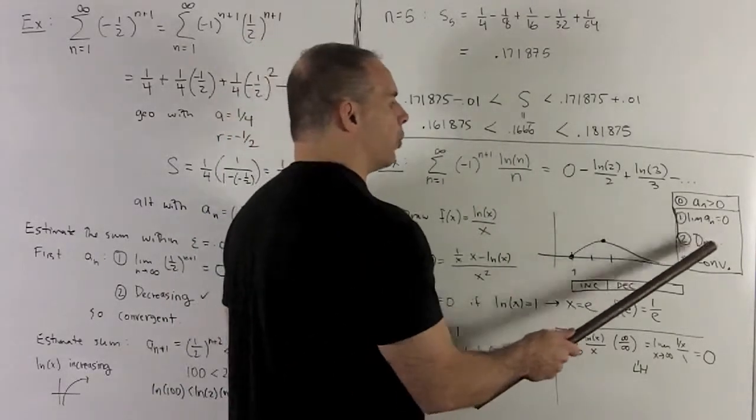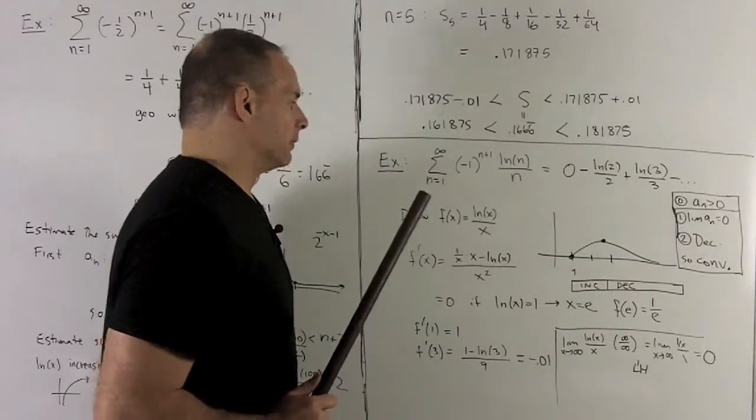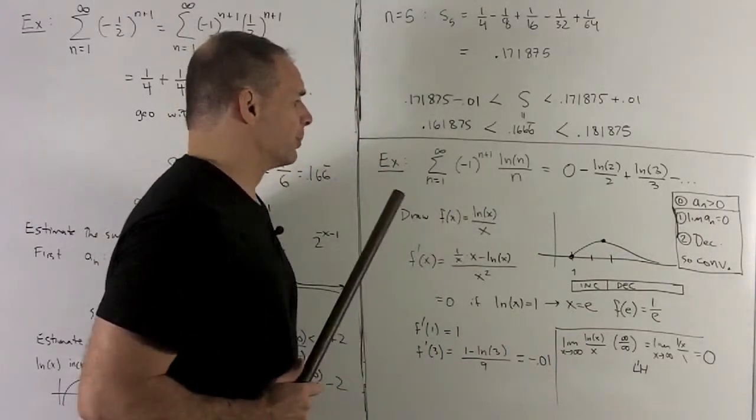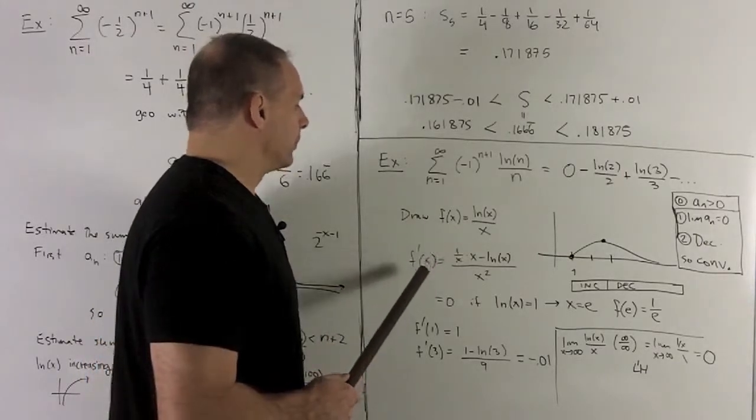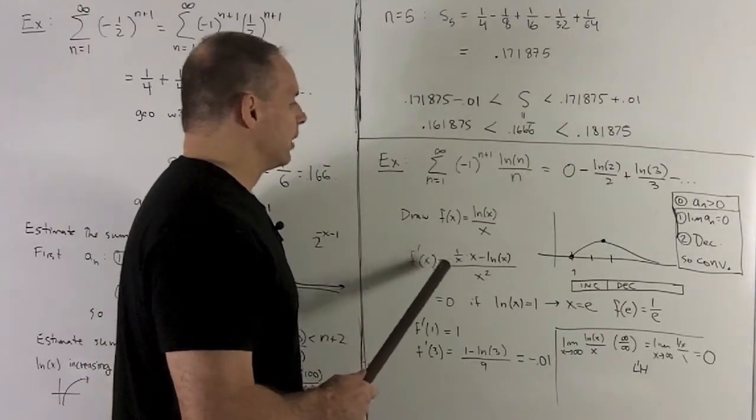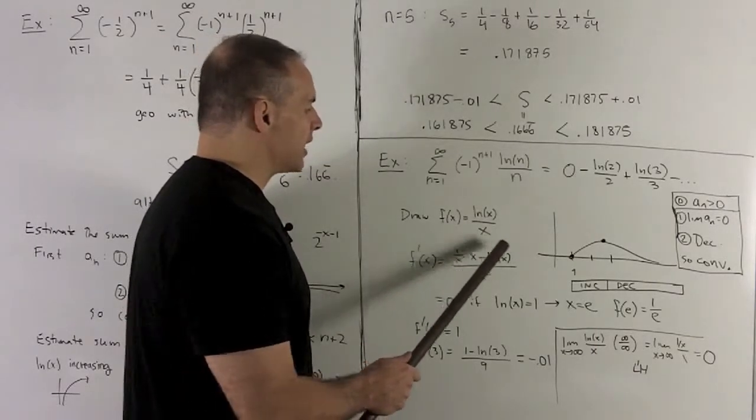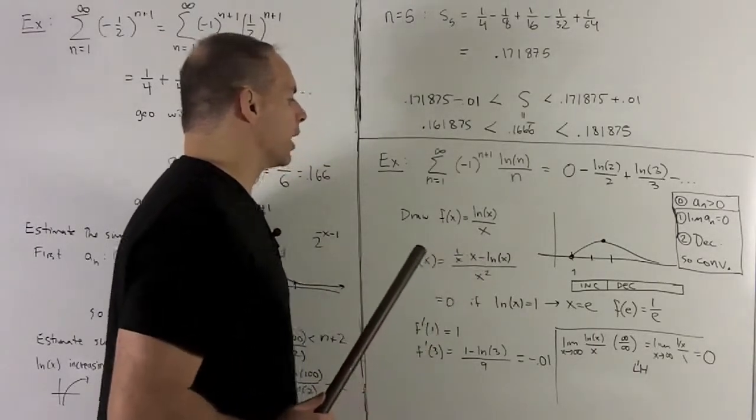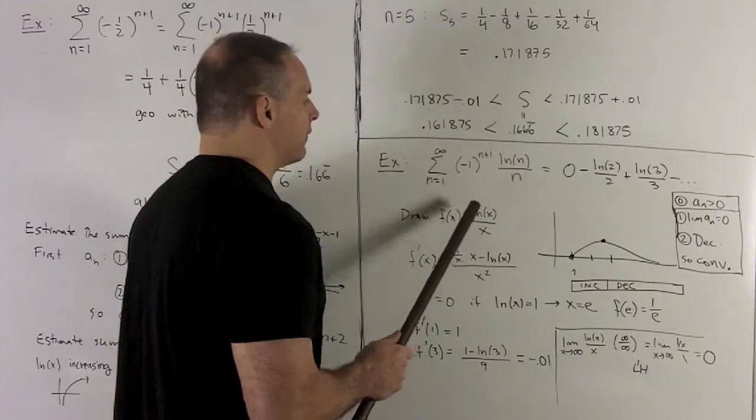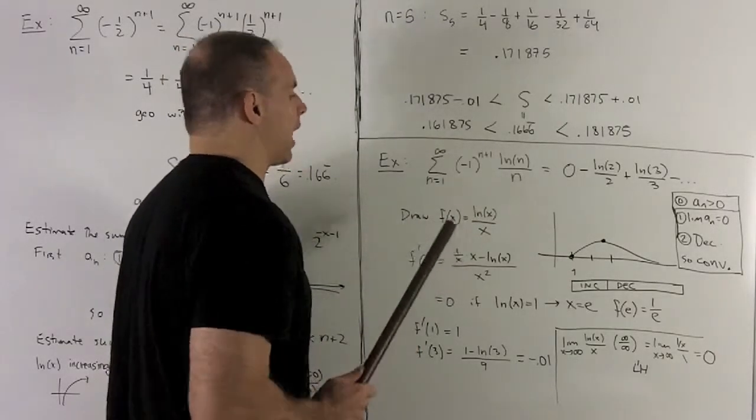To get the other two, I'm going to want to do the graph of natural log of x over x. To get that, we're going to take the first derivative. That's going to be a quotient rule. And that's going to give me 1 minus natural log of x over x squared. The only thing you need to remember there, derivative of natural log of x is 1 over x.